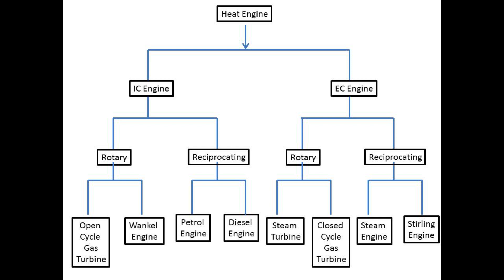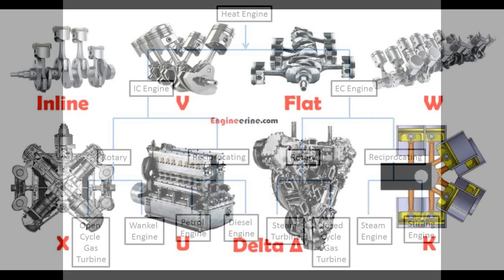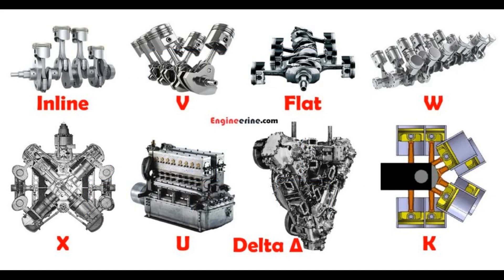3. Cycle of operation. On the basis of cycle of operation, the engine types are: Otto-cycle engine, which works on the Otto cycle; diesel cycle engine, which works on the diesel cycle; and dual cycle engine, also called semi-diesel cycle engine, which works on both diesel as well as Otto cycle.